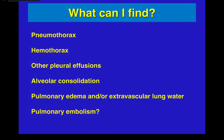So what can you find using lung ultrasound? You can find pneumothoraces, hemothorax, pleural effusions, alveolar consolidations like pneumonias, evaluation for pulmonary edema, and even pulmonary embolism through other measures such as DVT scanning.